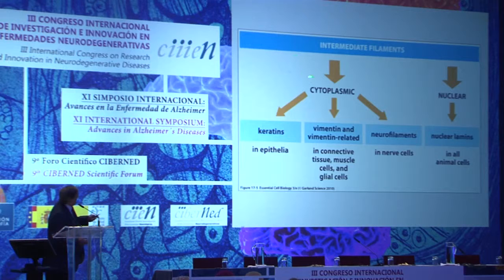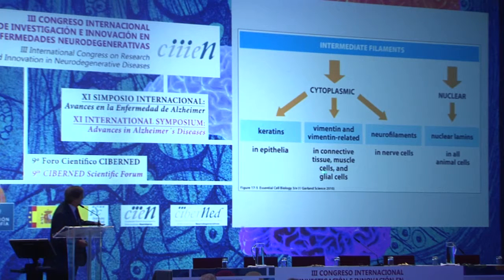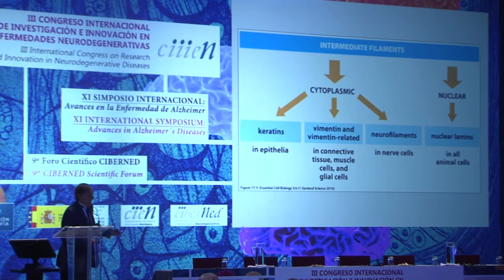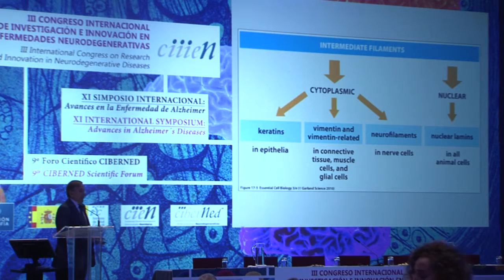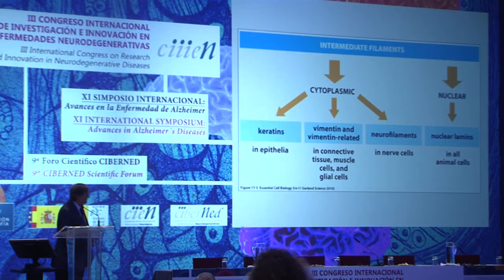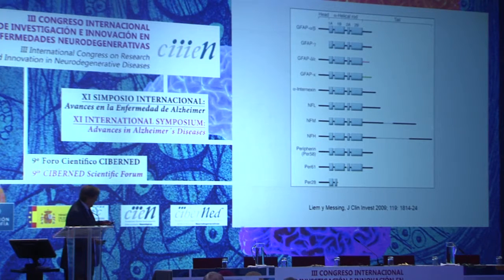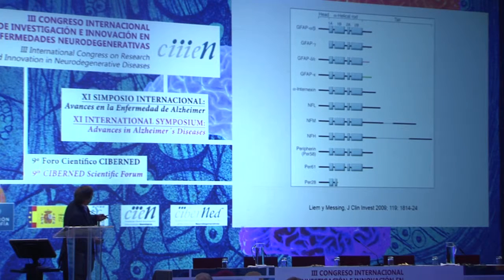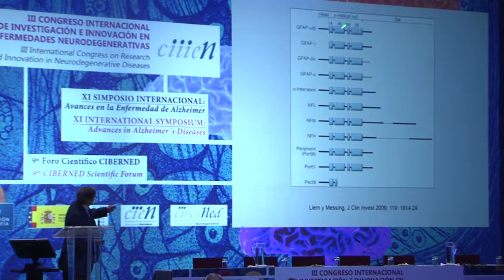Intermediate filaments may be cytoplasmic and nuclear. Cytoplasmic are keratins in epithelia, vimentin or vimentin-related in glial cells, neurofilaments in nerve cells, and finally nuclear lamins in all animal cells. This is a diagram illustrating the general structure of intermediate filaments consisting of a head domain, a rod domain with several alpha-helical areas, and finally the tail domain.